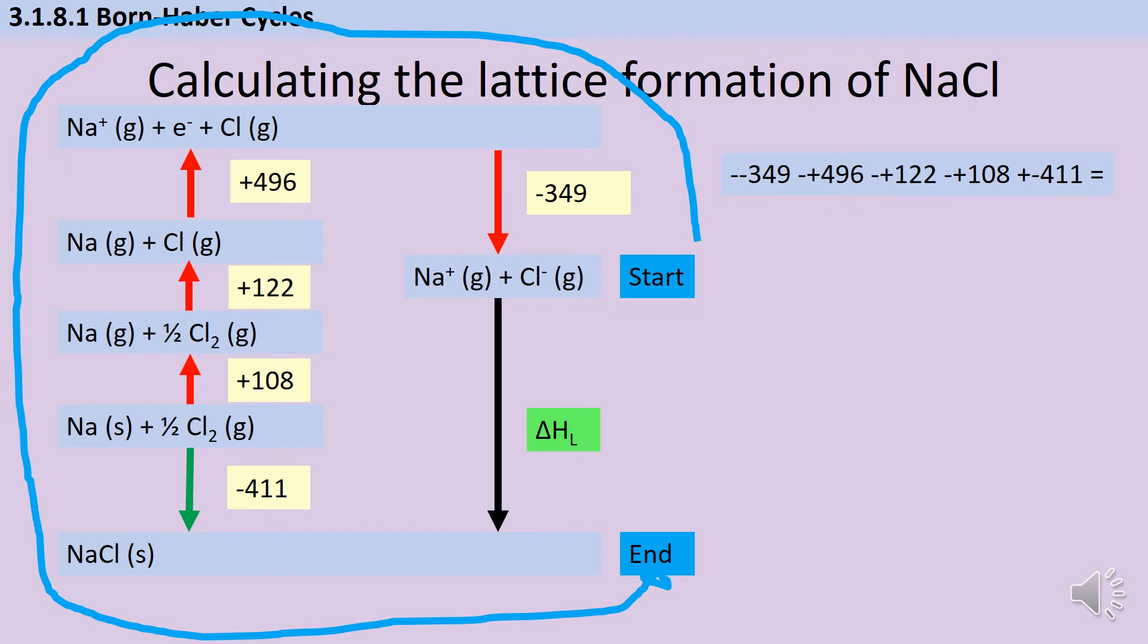and the right way along this formation arrow. So I'm going to take the negative of minus 349, the negative of plus 496, the negative of plus 122, the negative of plus 108, and then my final value I just add on as it is, I don't need to reverse it because I'm going the right way down that arrow, and that gives me an answer of minus 788 kilojoules per mole.